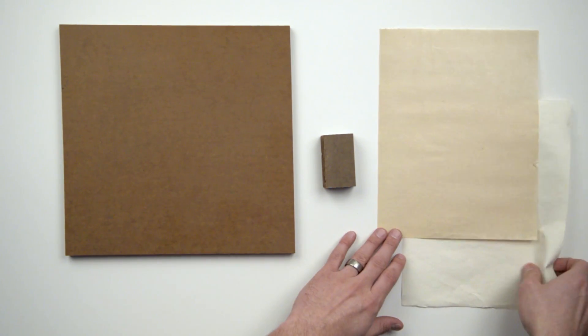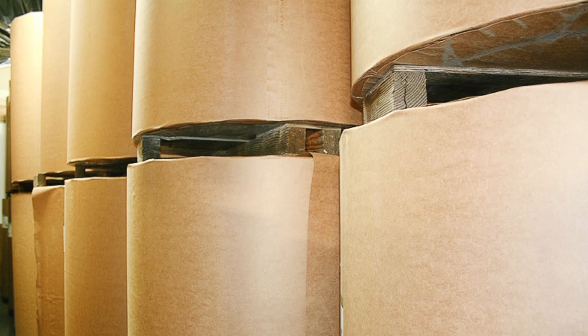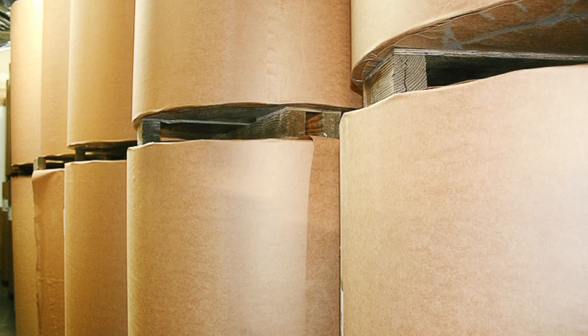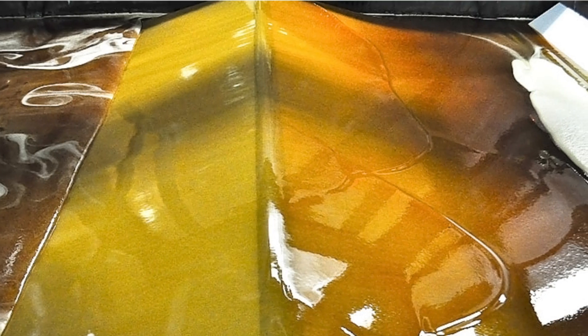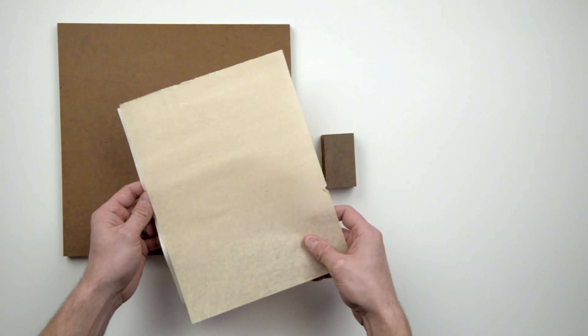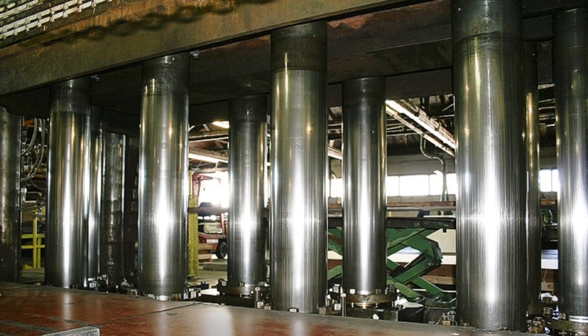RichLite starts as a pulp, which is then turned into rolls of paper. These rolls of paper run through a resin bath before they are trimmed and layered into sheets. Once the sheets are trimmed, they are pressed into full sheets.